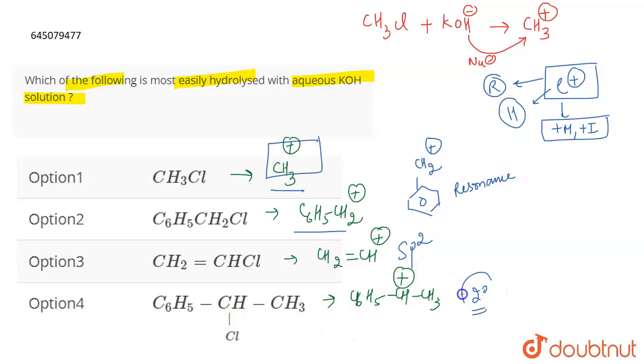Now if you talk about the next one, now this is a two degree, which is a secondary carbocation. And secondary carbocation is much stable as compared to the first one.